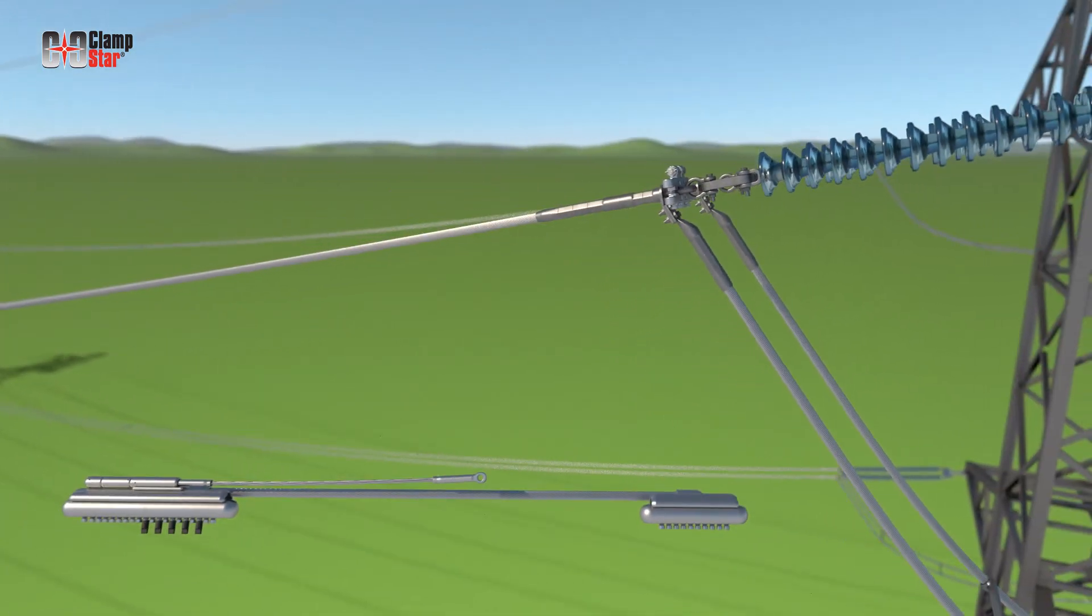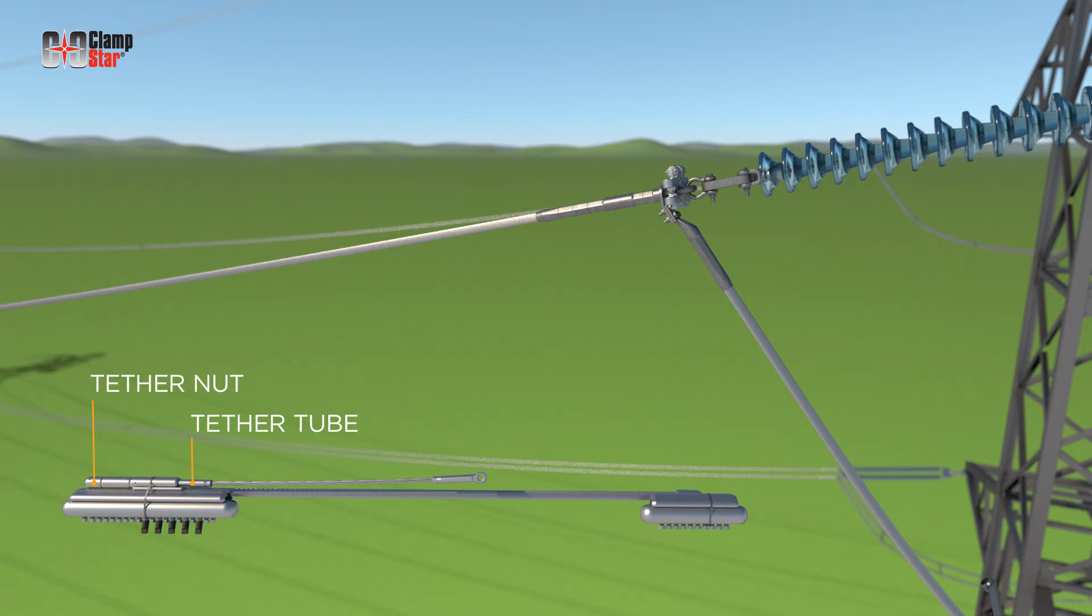To minimize effort in the field, ClampStar units are shipped with one end of the tether cable attached to the tether tube with the tether nut completely backed off. The length of the tether nut allows the threaded end to be drawn up taut inside the tether tube and serves as a corona shield. This tether tightening process is done as the last step in the installation process.